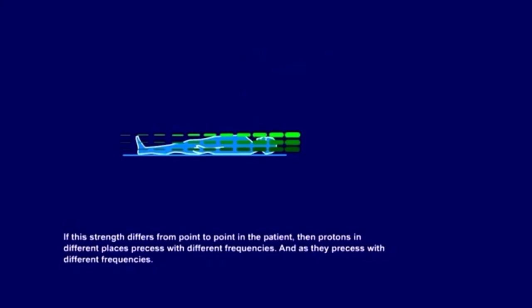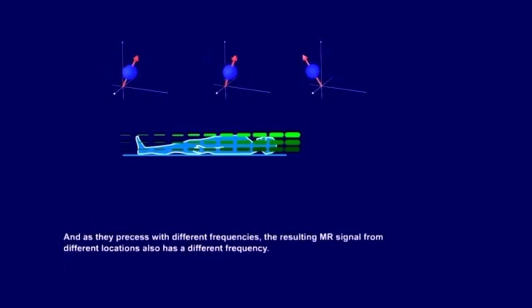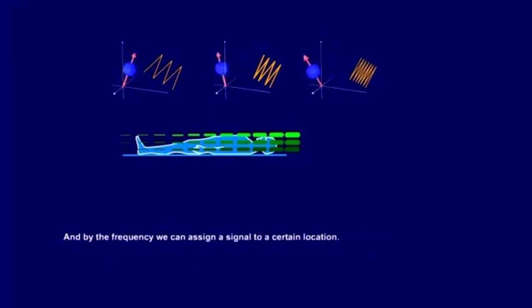If this strength differs from point to point in the patient, then protons in different places precess with different frequencies. And as they precess with different frequencies, the resulting MR signal from different locations also has a different frequency. And by the frequency, we can assign a signal to a certain location.